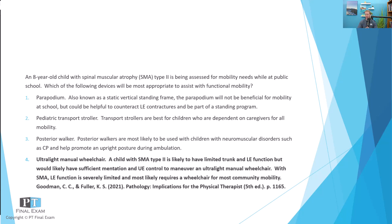Pretty much every school has elevators and ramps, along with accessibility options for the patient. For an eight-year-old child, we want to maximize their ability to negotiate the environment. The ultralight manual wheelchair is the best option. A caregiver could assist if needed — say, on a ramp or if the child is tired at the end of the day — but this device would allow the child to maneuver within the classroom and access the entire school environment fairly easily.